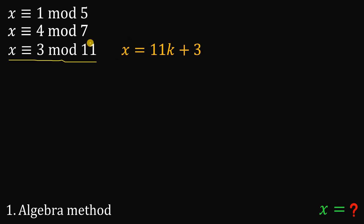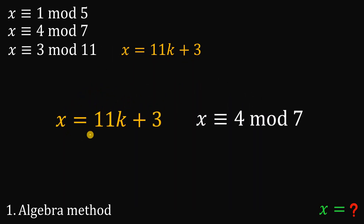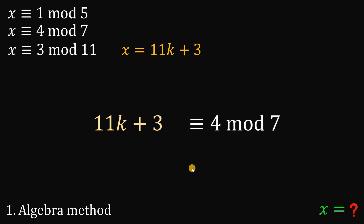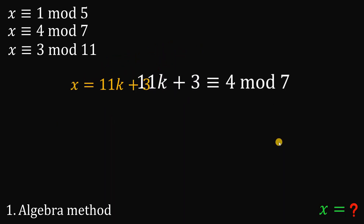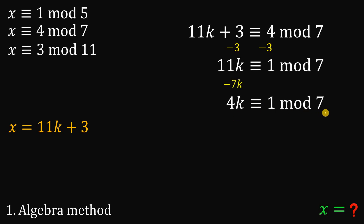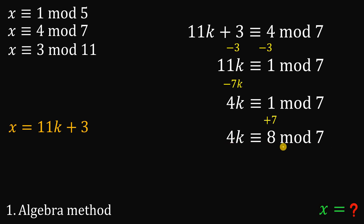What we're going to do is use this and the second congruence. We know x is equal to 11k plus 3, where k is an integer, and x is congruent to 4 mod 7. So we replace x with 11k plus 3. To solve this, subtract 3 on both sides, giving us 11k is congruent to 1 mod 7. Then subtract a multiple of 7 on the left-hand side, giving us 4k is congruent to 1 mod 7. Now add 7 to the right-hand side, giving us 4k is congruent to 8 mod 7. We can't divide both sides by 4 directly, so we get k is congruent to 2 mod 7.